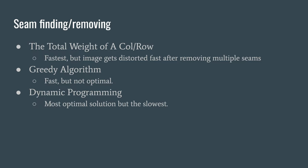After implementing the energy functions, let's talk about how I implemented the seam finding and removing. The first algorithm I implemented is pretty straightforward — I just removed the column or row with the minimum total energy. This way it's really fast, but the image gets distorted fast after removing multiple seams. Therefore, I created the second algorithm, which uses a greedy algorithm. This algorithm is really fast and it produces way better output than the first one. However, due to its limitations, this is not an optimal solution. Thus, I created the last algorithm, which uses dynamic programming. This algorithm is the most optimal solution, however, it is the slowest.